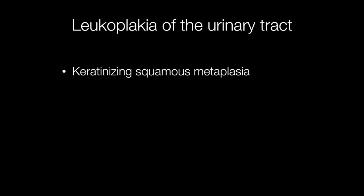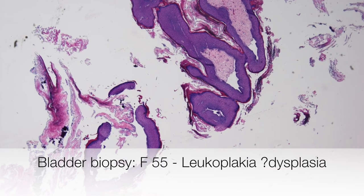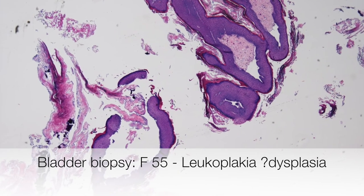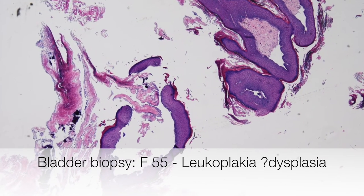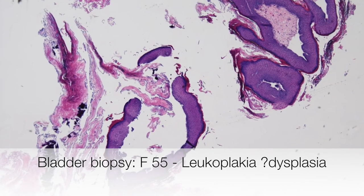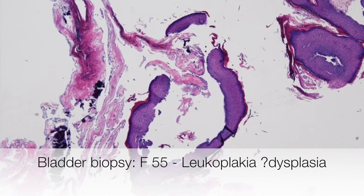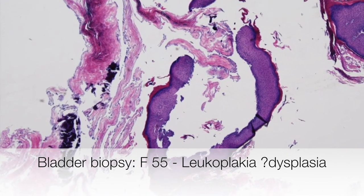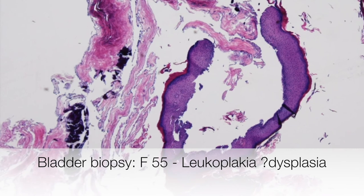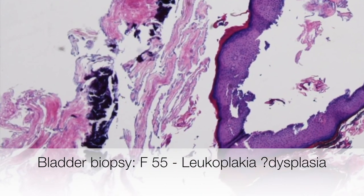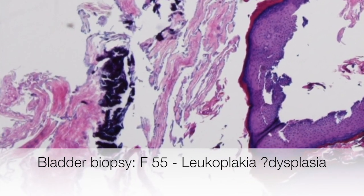Invariably in the urinary tract the cause of Leukoplakia is keratinizing squamous metaplasia. Here is a typical biopsy for Leukoplakia — the clinical details are bladder biopsy, Leukoplakia, query dysplasia, and the patient is a 55 year old woman. Looking at a low power view of the biopsies you can see why the patch appeared white, because of the keratin that is focally calcified, which we are zooming into.